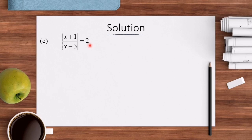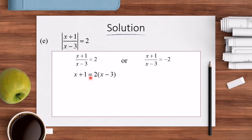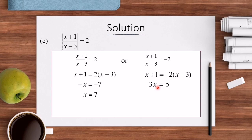Let's look at the solution for Question E: |(x + 1)/(x − 3)| = 2. Since this is 1 absolute value, we straight away use the basic definition. So (x + 1)/(x − 3) = 2 or (x + 1)/(x − 3) = −2. Cross-multiplying the first: x + 1 = 2(x − 3), giving −x = −7, so X = 7. For the second: x + 1 = −2(x − 3), simplifying gives 3x = 5, so X = 5/3. Therefore the answer is X = 7 or X = 5/3.